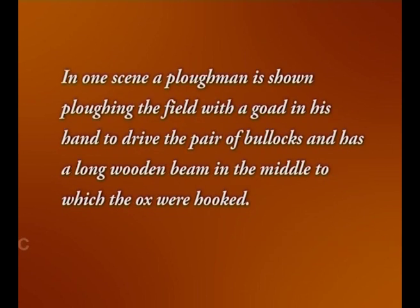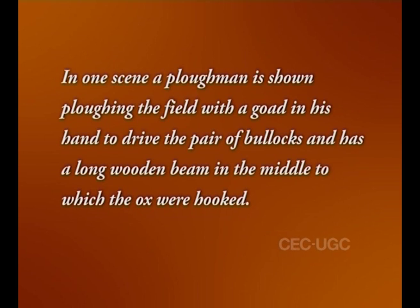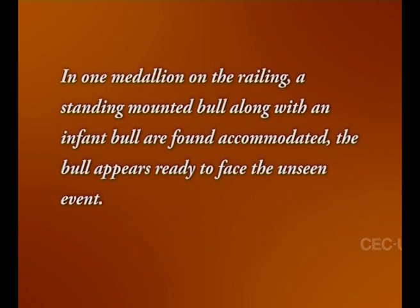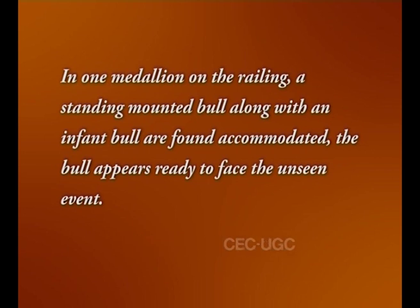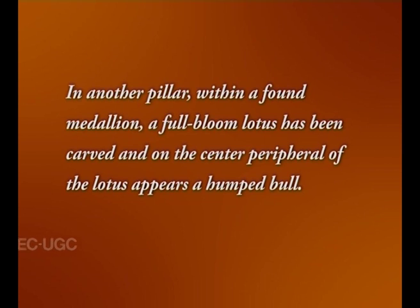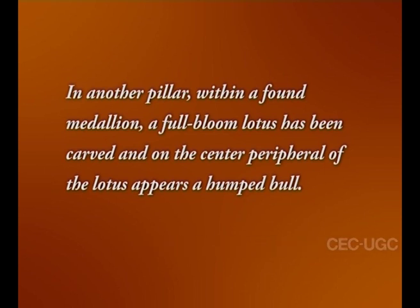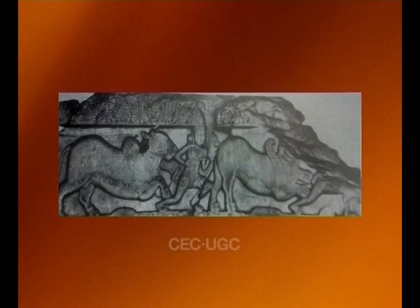In one scene, a plowman is shown plowing the field with a goad in his hand to drive the pair of bullocks, with a long wooden yoke in the middle to which the oxen were hooked. In one medallion on the railing, a standing mounted bull along with an infant bull are found accommodated; the bull appears ready to face the unseen event. In another pillar medallion, a bull-bloom lotus has been carved and on the center of the lotus appears a humped bull. In one frieze, the bulls are shown running violently from right to left.